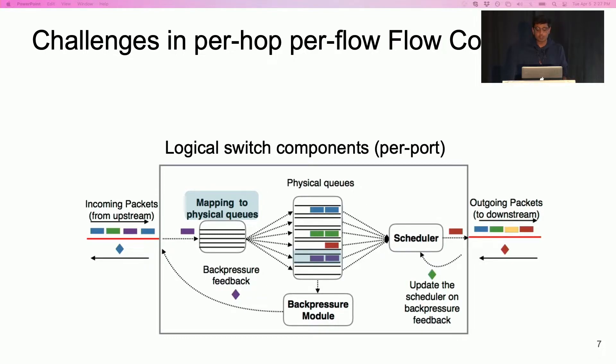First, when a packet arrives at the switch, the switch maps it to a physical queue at the destination egress port. Next, based on the queue occupancy, the switch generates backpressure feedback per flow and sends it to the upstream. Finally, the scheduler at each egress port forwards packets from queues while respecting the received backpressure feedback. Note that this framework is largely orthogonal to the scheduling policy. For this talk, I'll assume fair queuing as my scheduling policy.